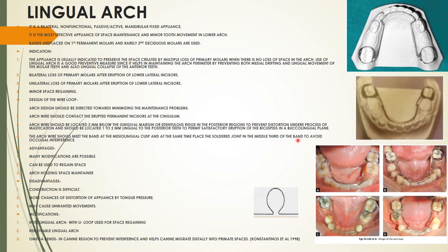The arch wire should meet the band at the mesiolingual cusp, with the soldered joint at the middle third of the band to avoid occlusal interferences. Advantages: many modifications are possible and it is an arch-holding space maintainer. Disadvantages: construction is difficult; greater chances of distortion due to tongue pressure; and if active, it may cause unwanted tooth movement.